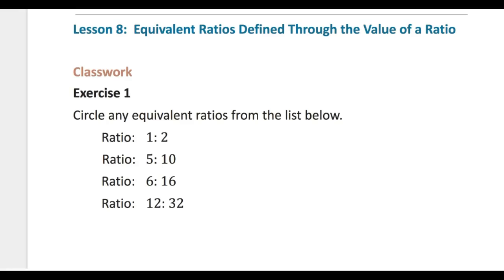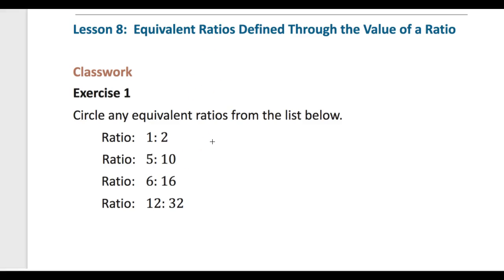Hi, today we're going to be doing Lesson 8: Equivalent Ratios Defined Through the Value of a Ratio. Classwork Exercise 1 states: circle any equivalent ratio from the list below. You can circle on your paper, or if you're working in Google Documents, you have to just write the ratios next to each other on the side.